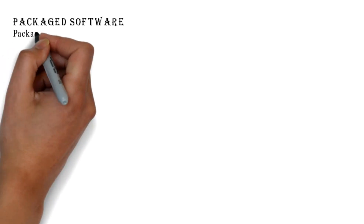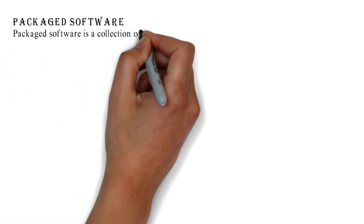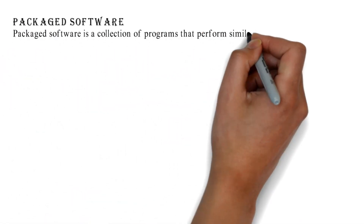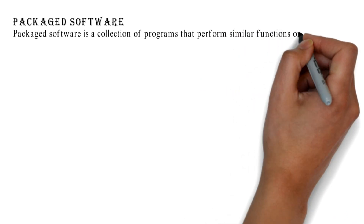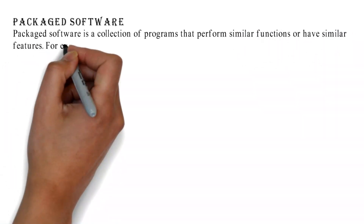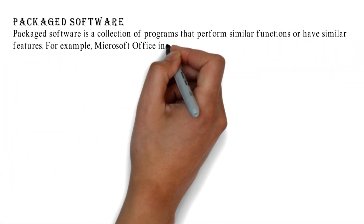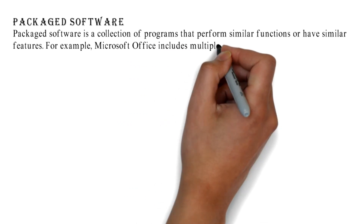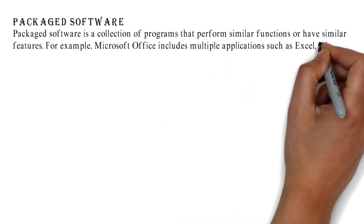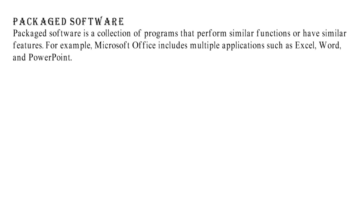Packaged software is a collection of programs that perform similar functions or have similar features. For example, Microsoft Office includes multiple applications such as Excel, Word, and PowerPoint.